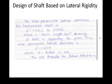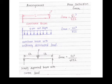For the design of shaft based on lateral rigidity, the maximum permissible lateral deflection is generally between 0.001L to 0.003L, where L is the shaft length between the bearings. The value of deflection can be evaluated depending on different types of loading arrangements.